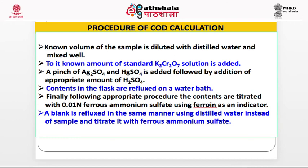Procedure of COD calculation: A known volume of the sample is diluted with distilled water and mixed well. A known amount of standard K2Cr2O7 solution is added. A pinch of silver sulfate and HgSO4 is added, followed by an appropriate amount of H2SO4. Contents in the flask are refluxed. Finally, following appropriate procedure, the contents are titrated with 0.01N ferrous ammonium sulfate using ferroin as an indicator. A blank is refluxed in the same manner using distilled water instead of sample and titrated with ferrous ammonium sulfate.